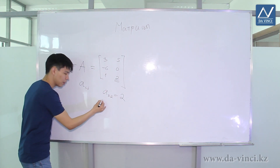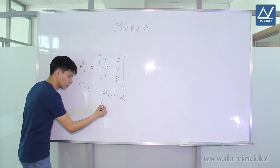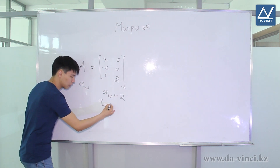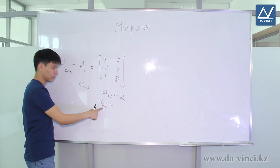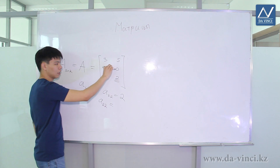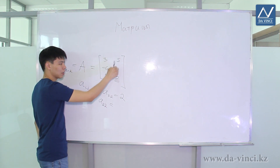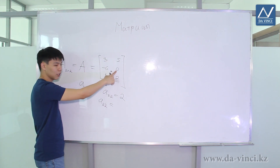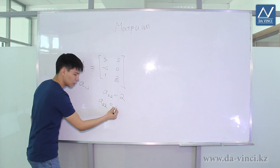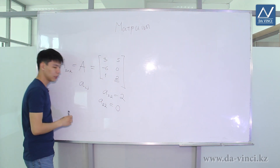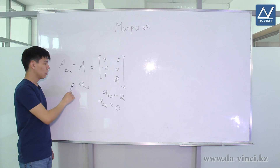For example, A_{2,2} refers to the second row and second column. In our case, that element is 0.